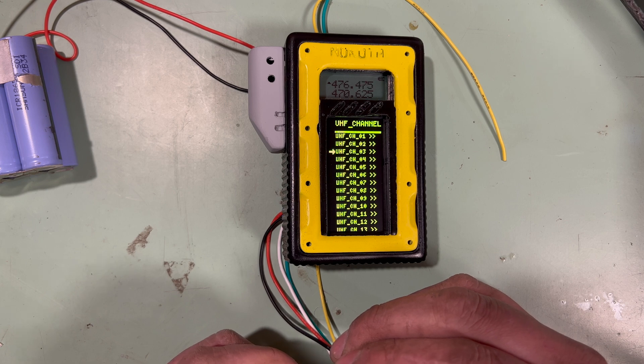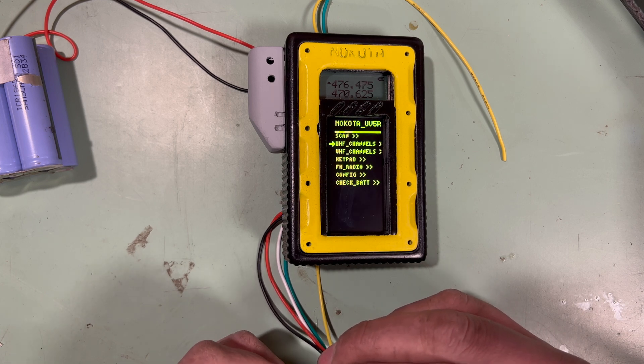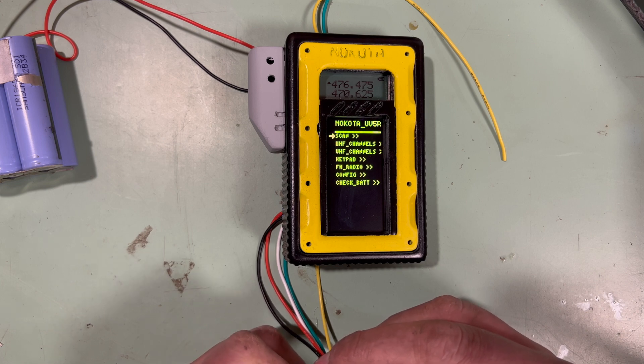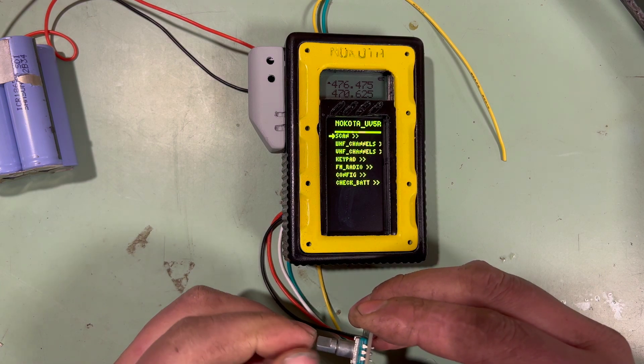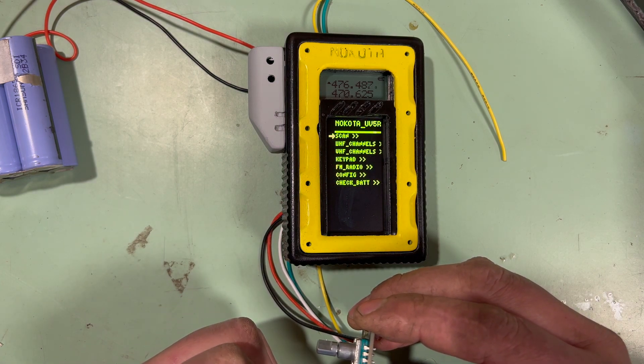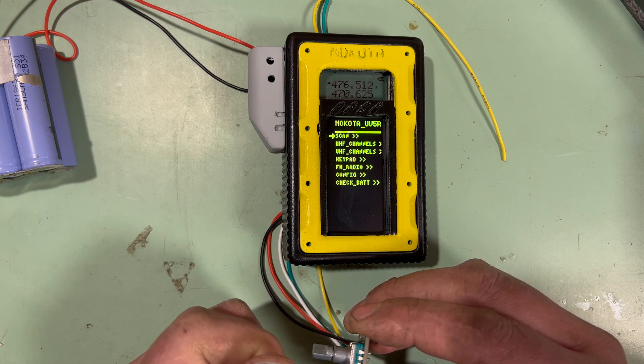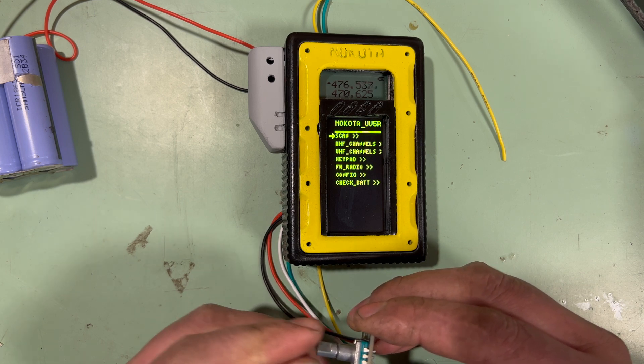There's another version of that for VHF. There's the scan function. Scan just presses and holds the scan button for 2.1 seconds which enables the scan. You can click it again to stop the scan.